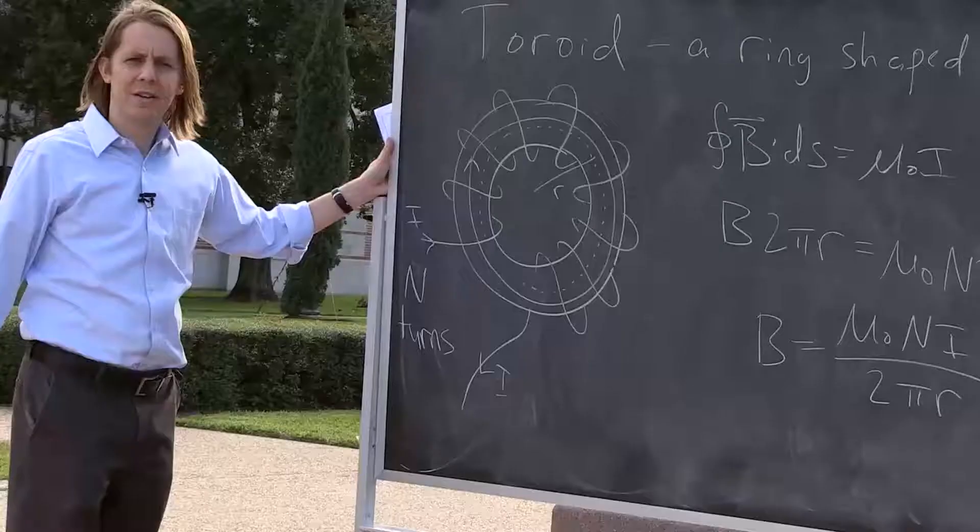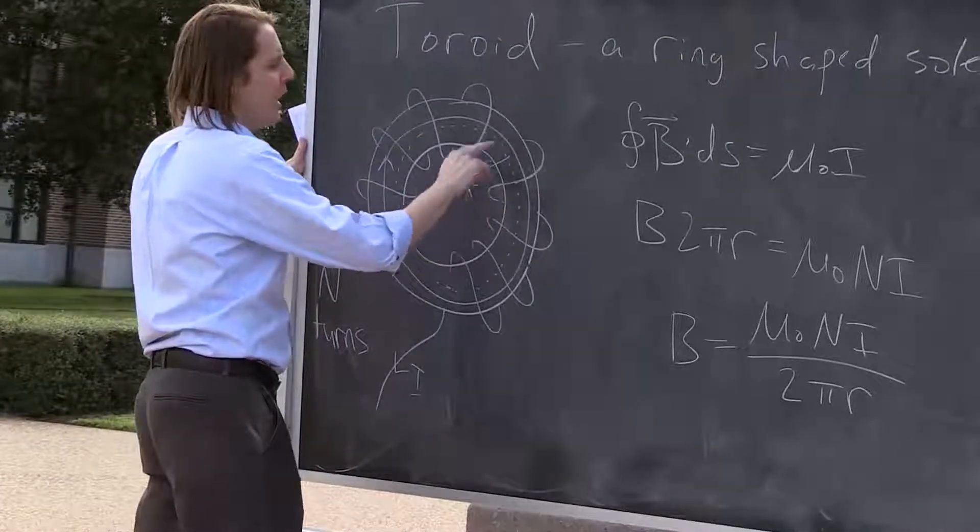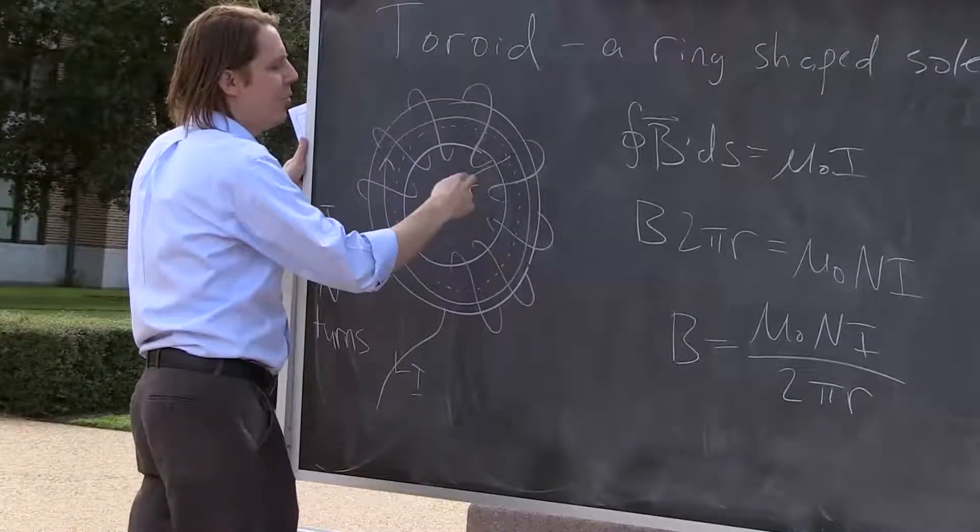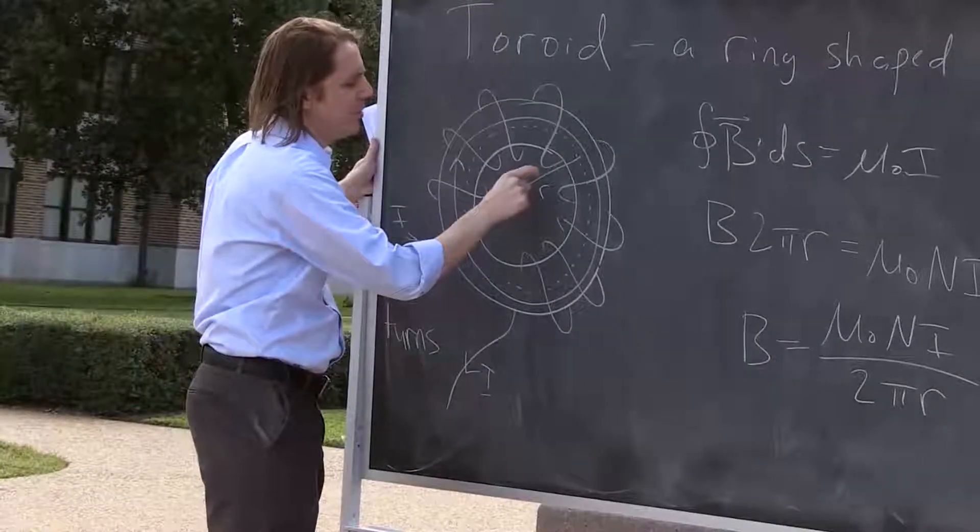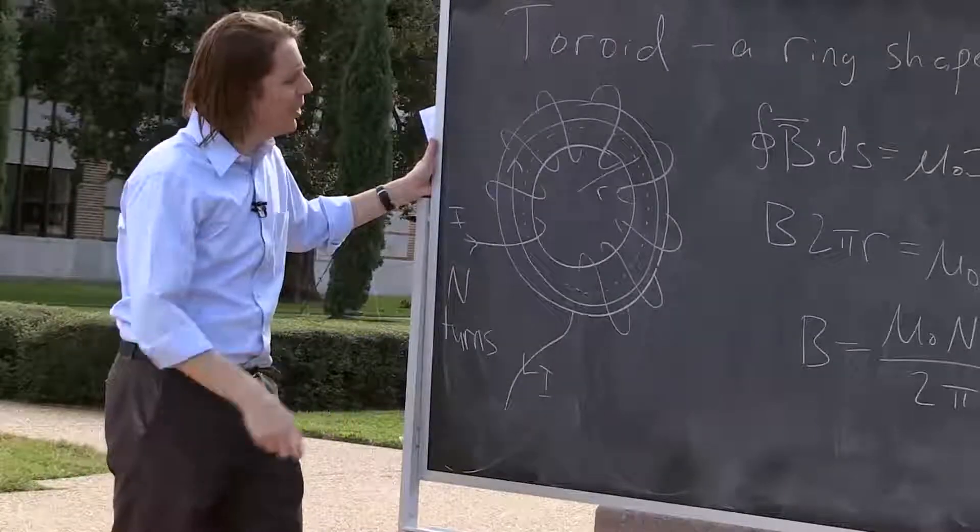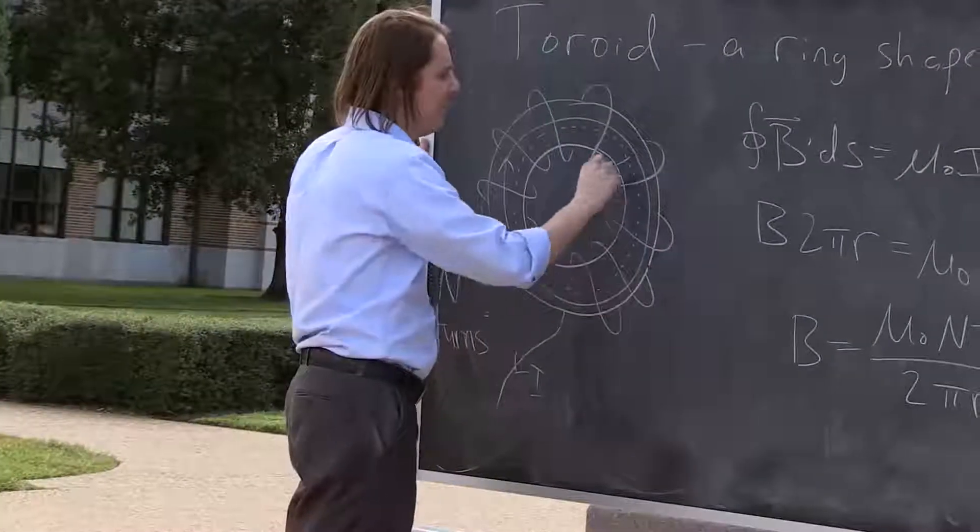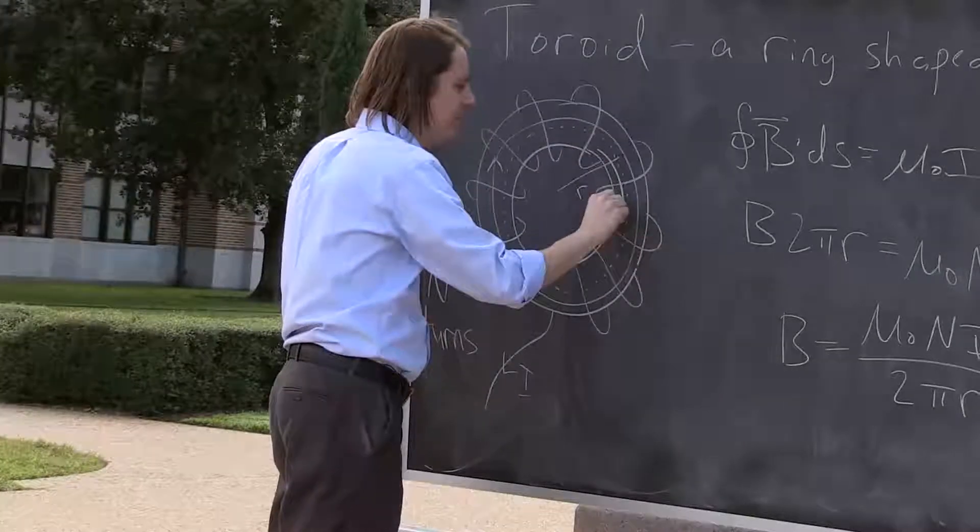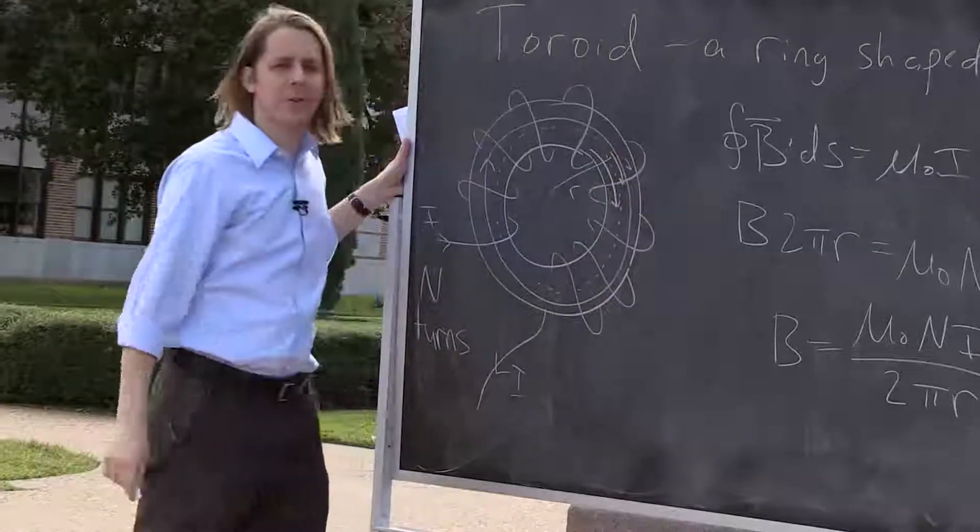So you can see it doesn't really care that much about the properties of the toroid. All it really cares about is where are you out here in radius and what's the density of your loops. It doesn't really care about the inner radius of the toroid or the outer radius of the toroid, it just matters where you are in r. And also you see that the magnetic field actually decreases with radius. So the magnetic field here close to this inside edge would be bigger than the magnetic field there.